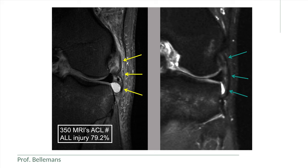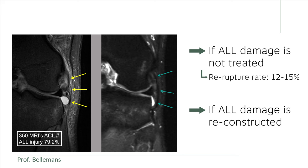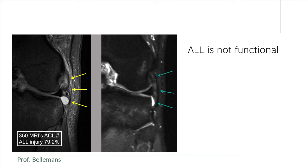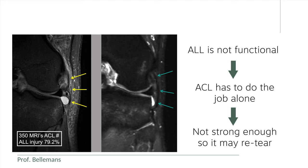Here you see an example of an athlete with an ACL tear and a severely stretched-out anterolateral ligament that is no longer functional. If your surgeon then decides to operate only on the ACL and do nothing about the ALL damage, your ACL re-rupture rate will be 12–15%. Whereas if your surgeon also reconstructs the anterolateral ligament, your re-rupture risk would be reduced to only 2–3%. The reason is that the anterolateral ligament helps the ACL protect against rotation. If the ALL is not functional, the ACL has to do the job on its own, and it is simply not strong enough — and may re-tear.